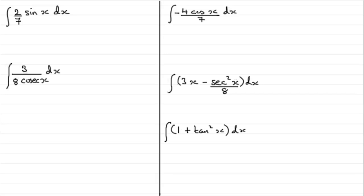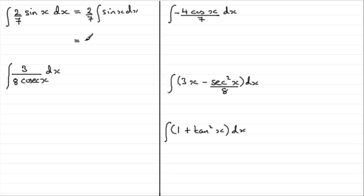OK, let's see how you got on. The first one is fairly straightforward — just demonstrating that you can pull the constant out front of the integral. So we get 2 sevenths times the integral of sin x with respect to x. The integral of sin x with respect to x is minus cos x. So putting the minus at the front: minus 2 sevenths cos x, plus the constant of integration.